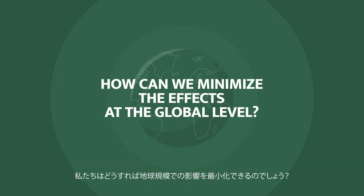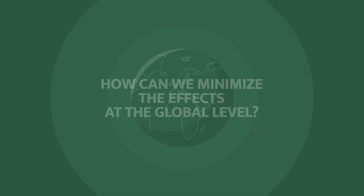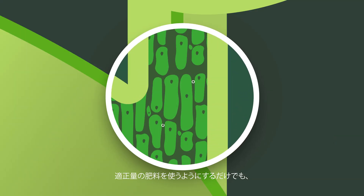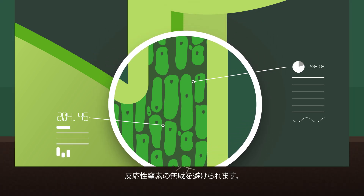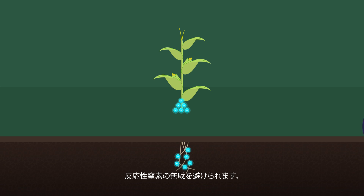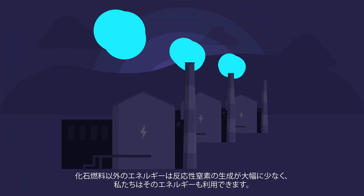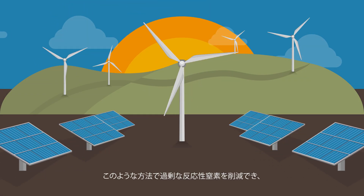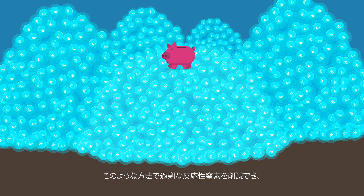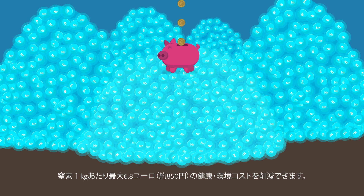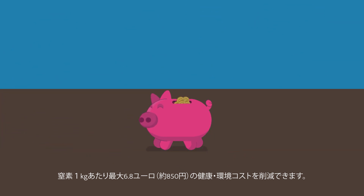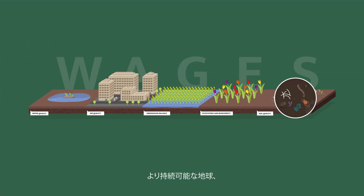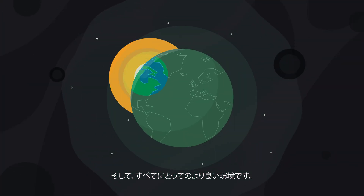How can we minimize the effects at a global level? We can optimize our fertilization methods by using only the right amount of fertilizer, and thus avoid wasting reactive nitrogen. We can also use non-fossil energy that creates far less reactive nitrogen. With these options, we can cut the excess of reactive nitrogen, avoiding costs of up to 6.8 euros for each kilogram of nitrogen. And the most important reward? A more sustainable planet and a better environment for all.